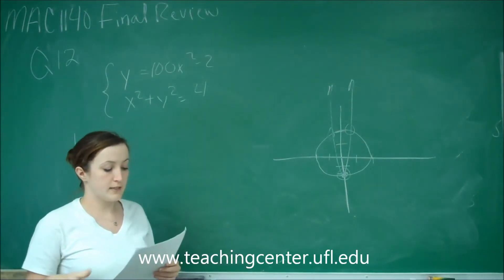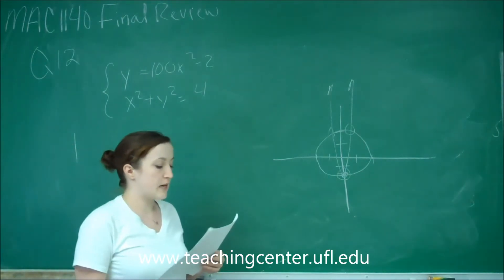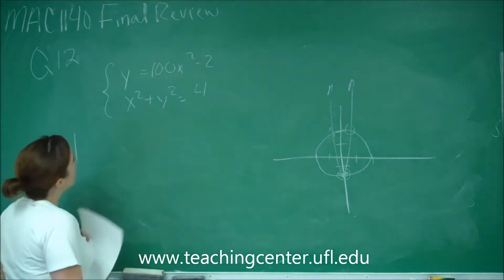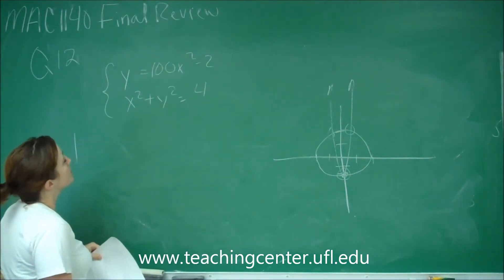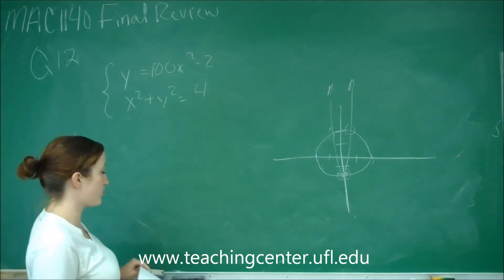This is question number 12 and it says solve systems of equations. Part a says how many solutions does this system of equations have? We get y equals 100x squared minus 2 and x squared plus y squared equals 4. And then it gives us a hint to draw a picture.